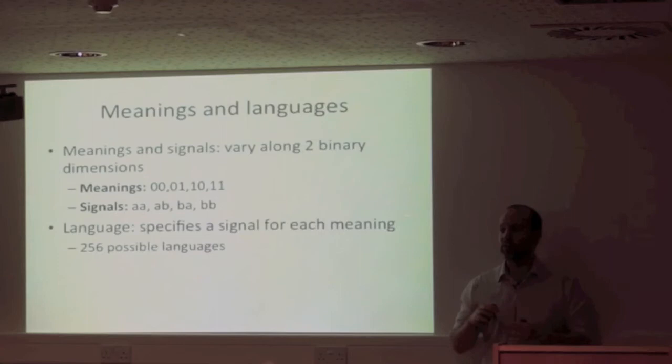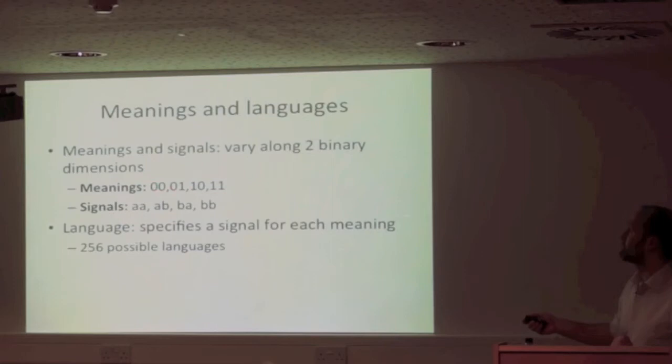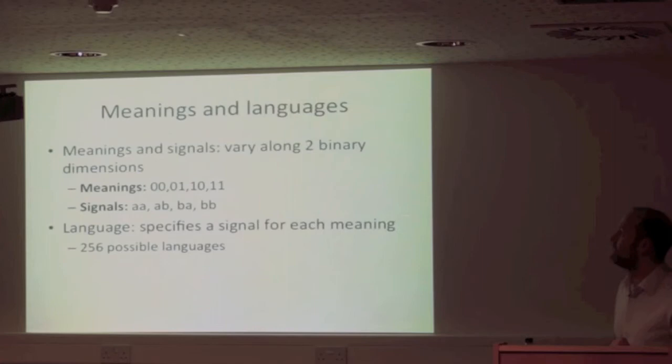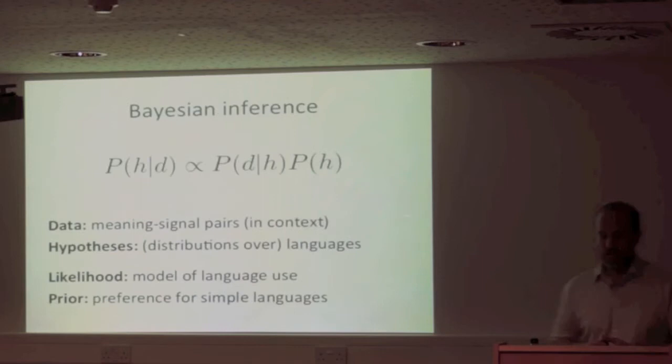The meanings and signals in the simulation are much simpler than in the experiment. Meanings are two-dimensional binary vectors: 0,0 / 0,1 / 1,0 / 1,1. Signals are analogous two-element sequences of A and B. A language assigns a signal to every meaning. With these four meanings and possible signals, there are 256 possible languages. The model has structured meanings and potentially structured signals, and the key question is how these two sets are aligned.